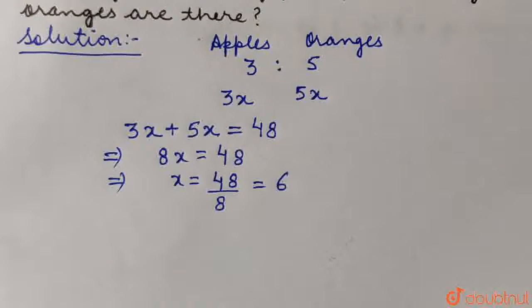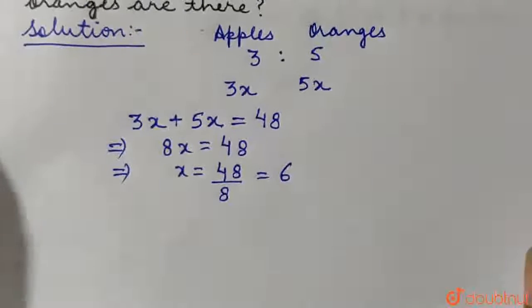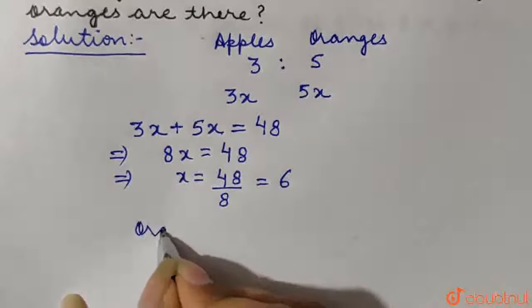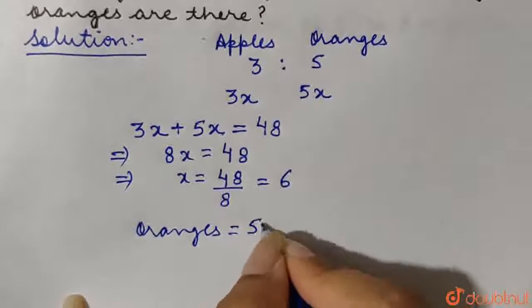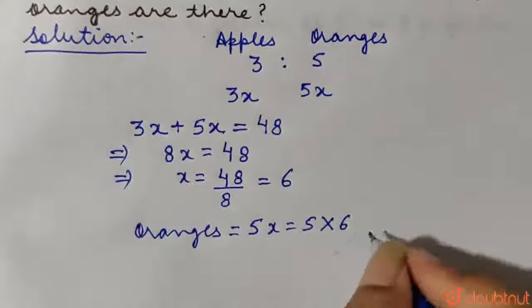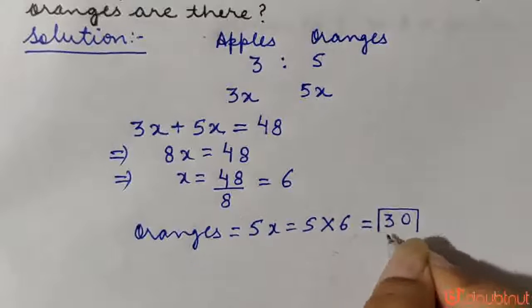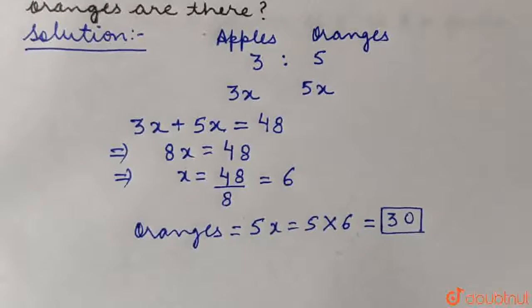Now we have to calculate how many oranges are there. Since there were 5x number of oranges, the total number of oranges is equal to 5x, that is 5 into 6, which is equal to 30. So there are a total of 30 oranges in the fruit basket.